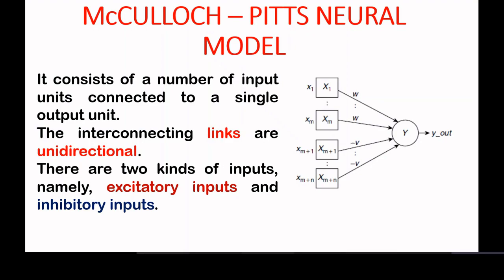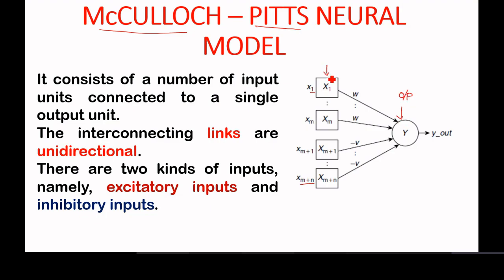The neural model proposed by McCulloch and Pitts consists of input units from 1 to M plus N, making up the total number of input units, and a single output unit. These are all the input units connected to that single output unit.